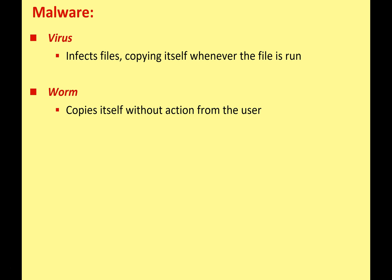A worm is similar to a virus but more advanced — it can copy itself without any action from the user. Once a worm is on your system, it'll try to run your mailbox, email itself out to all your contacts, and copy itself to other devices. If you're running on a network, a worm will try to copy itself from computer to computer. When people often talk about viruses nowadays, they usually mean worm, because most people aren't technically inclined and tend to mix up these terms.